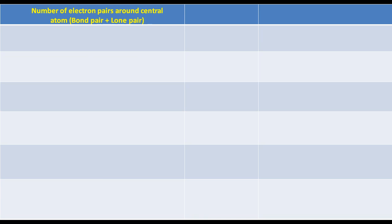First, we are going to learn the relation between the number of electron pairs around the central atom, hybridization, and electron pair geometry or the electron pair arrangement. Let us make a table with three columns. The left column is for the number of electron pairs around the central atom, which is equal to the sum of the number of bond pairs and lone pairs. The middle column is for hybridization and the right column is for the electron pair geometry.